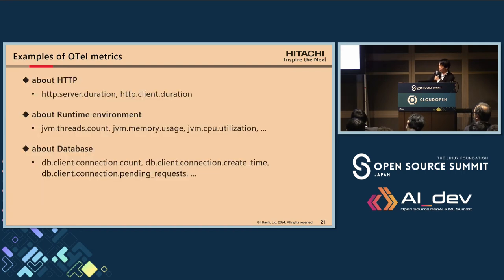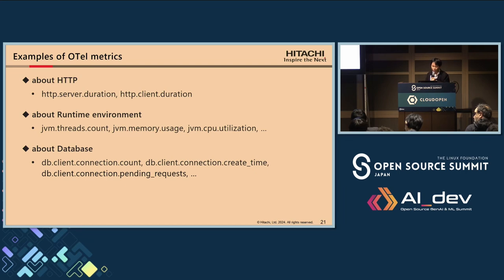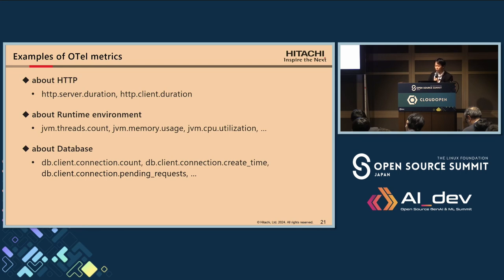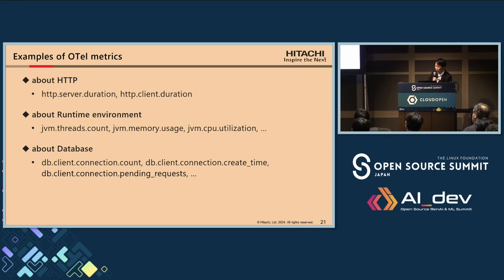Here are some useful metrics for testing. To check the status of requests and responses, HTTP metrics are useful. Duration is the only metric always recorded about HTTP, and the HTTP status code is recorded as an attribute of duration. We can calculate the error rate by aggregating the sample count of duration by status code. Error rate and similar metrics are sometimes calculated automatically by the telemetry management platform. To check resource usage, metrics related to the runtime environment like the JVM are useful, providing information on thread count, memory, and CPU usage.